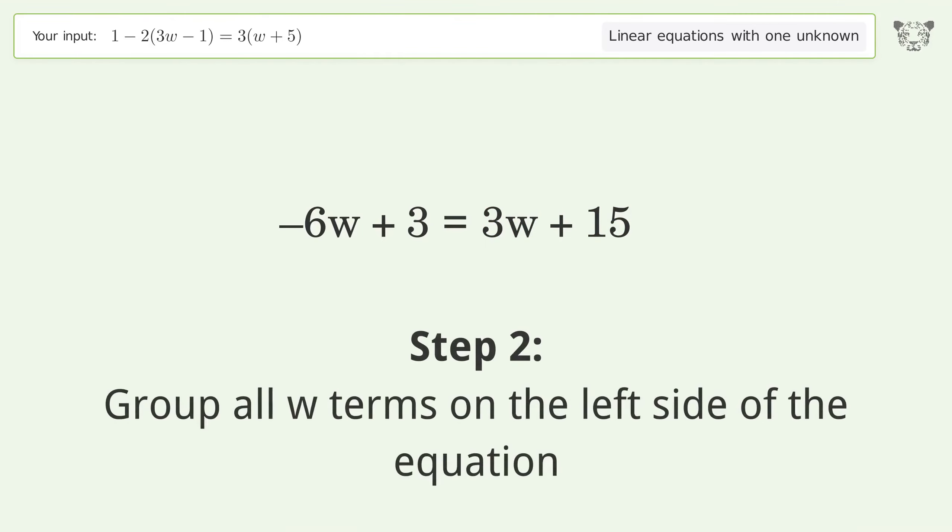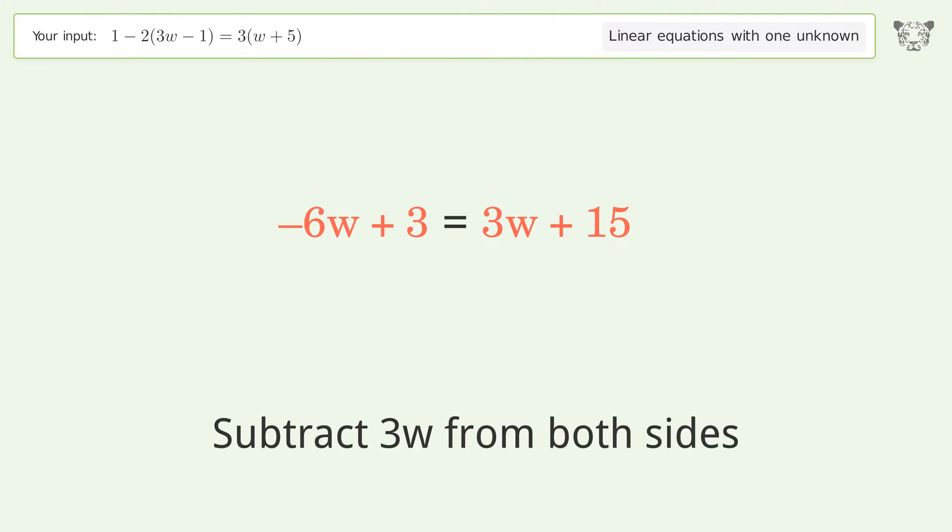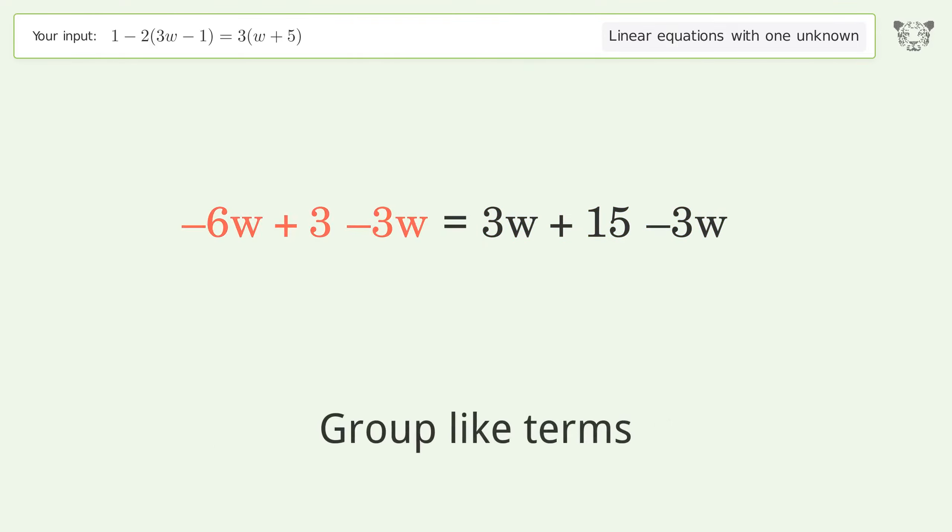Group all w terms on the left side of the equation by subtracting 3w from both sides. Group like terms and simplify the arithmetic.